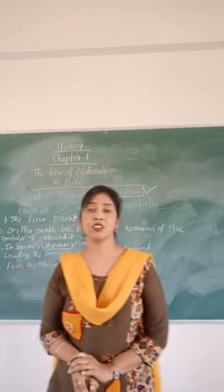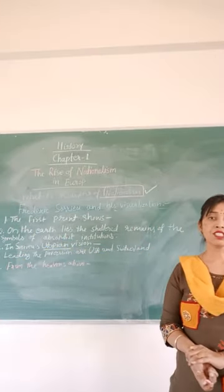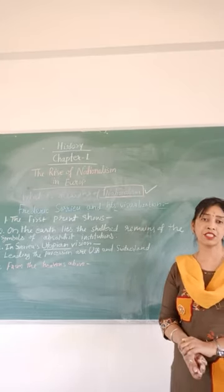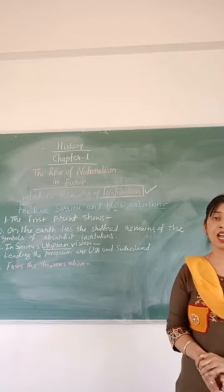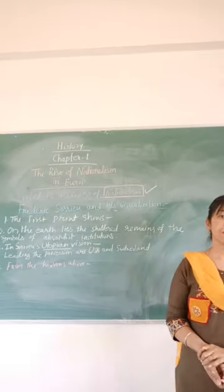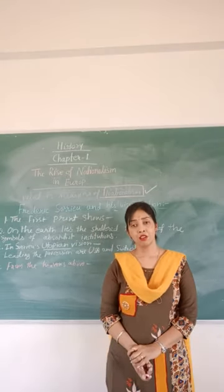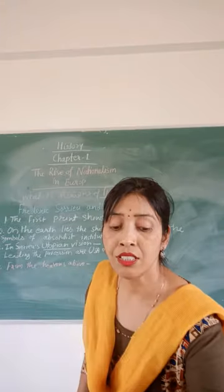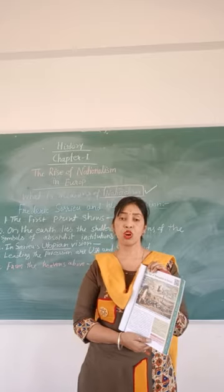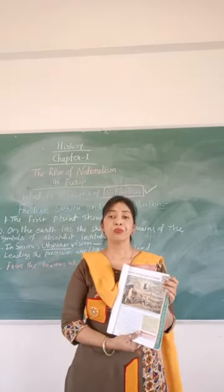The fifth vision of Frederic Sorrieu is from the heavens above. In this vision, Christ, saints, and angels gaze at the scenes below. The artist symbolizes fraternity among the nations of the world. So all of Sorrieu's visualizations can be seen in this picture.